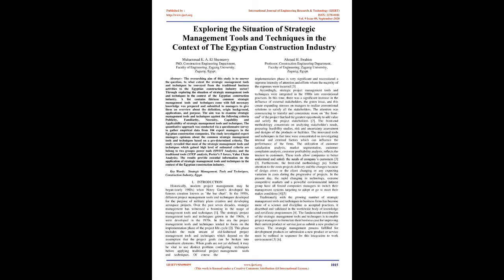The study investigated expert managers' opinions about the common strategic management tools and techniques based on predetermined criteria. The study revealed that most of the strategic management tools and techniques which gained a high level of estimated criteria belong to two groups: power tools — SWOT analysis — and the traditional tools — STEP analysis, Porter's Five Forces, and Value Chain Analysis. The results provide essential information on the application of strategic management tools and techniques in the context of the Egyptian construction industry.